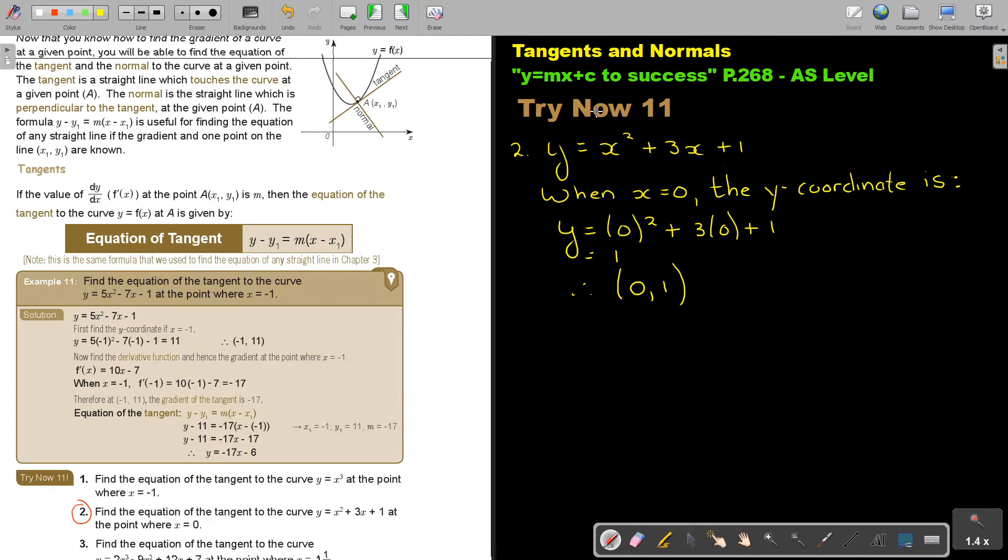Now we're going to differentiate. Let's use another color. So dy/dx, the derivative function. That's easy, that's 2x plus 3. And now we're going to find the gradient. We substitute the x value. So we say when x is zero, dy/dx is equal to 2(0) plus 3 and that will just give a gradient of three. So we already know that the gradient of this tangent is three.